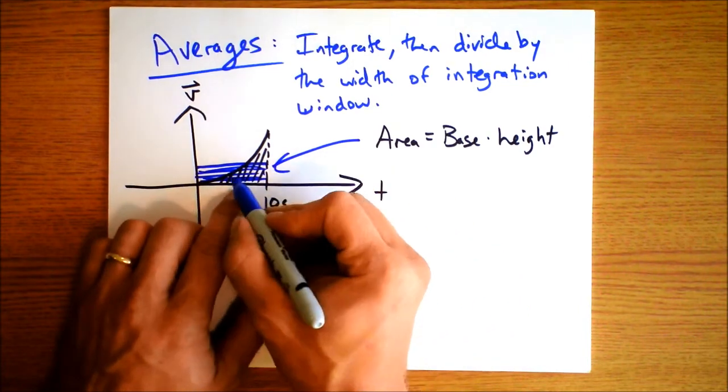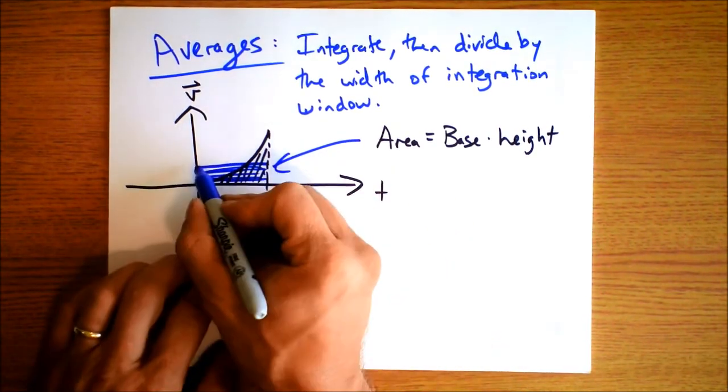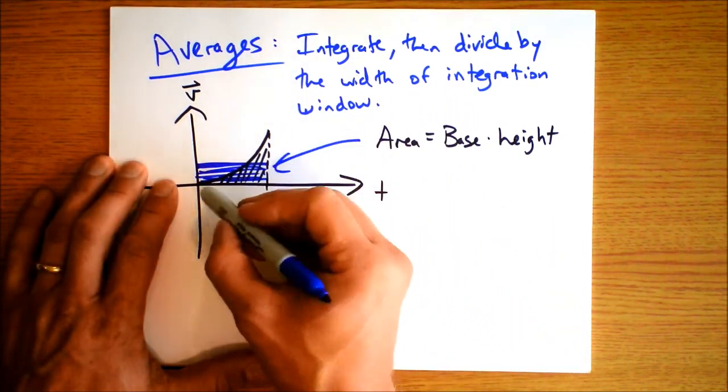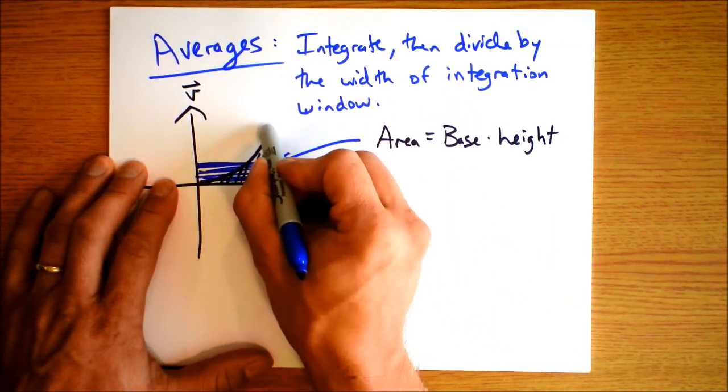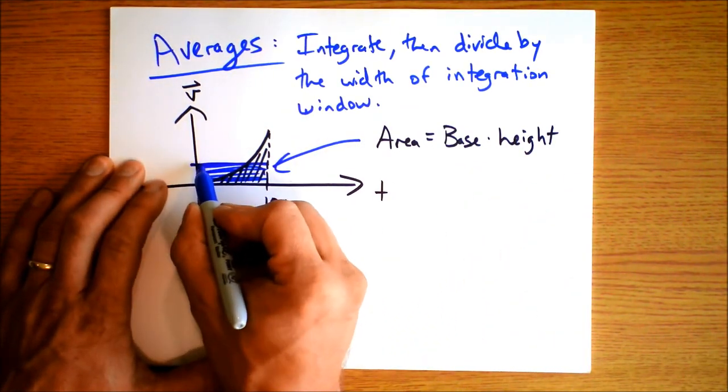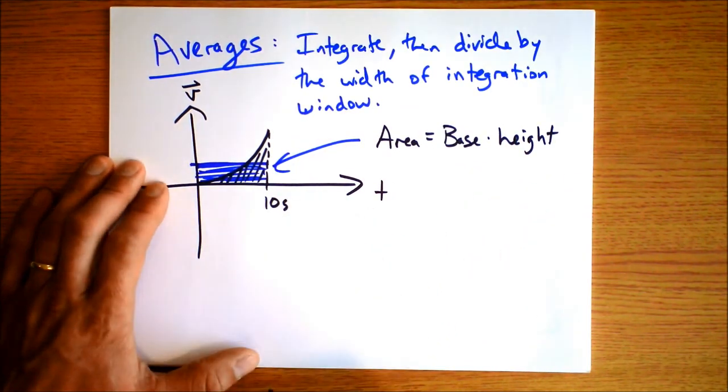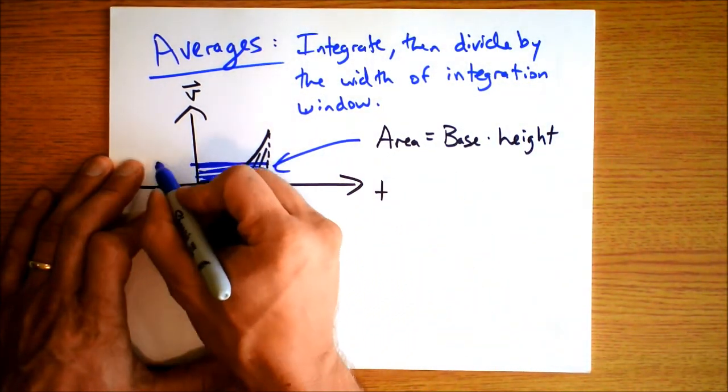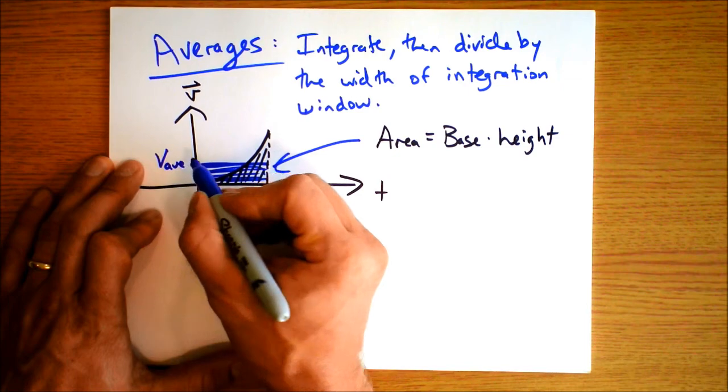So I'm gonna draw a rectangle that I think kind of represents the same area. And I think it's gonna be like right here. You think that that has about the same area? I hope that it does. But that's the area of that rectangle right there. Base times height.